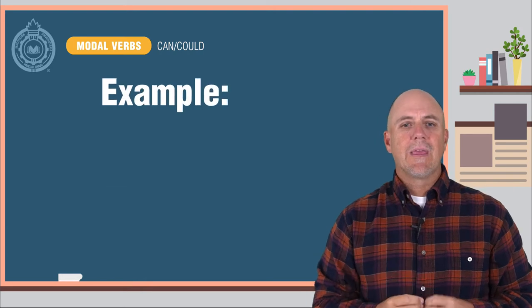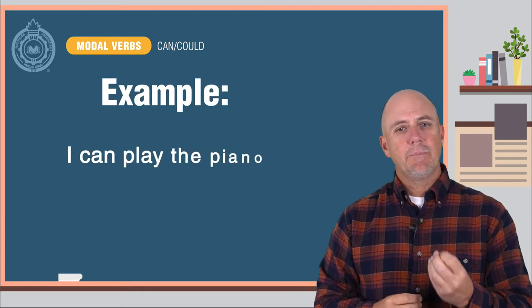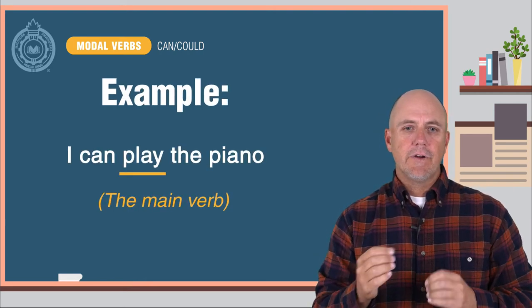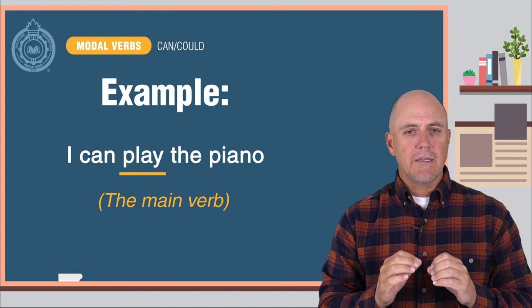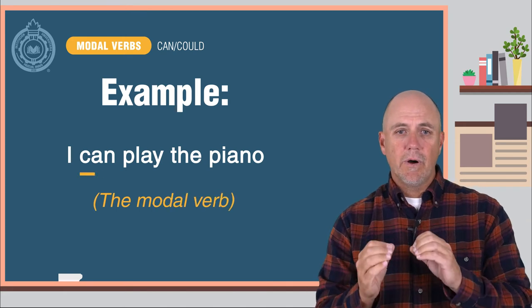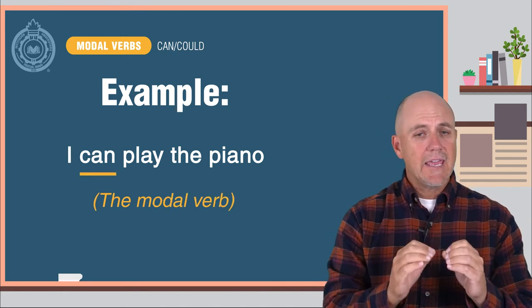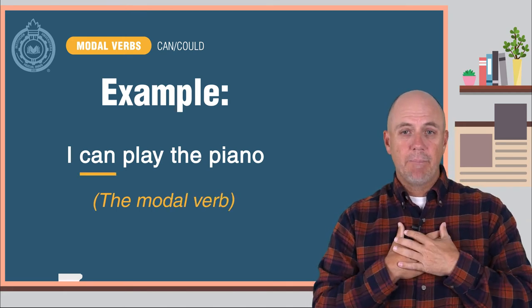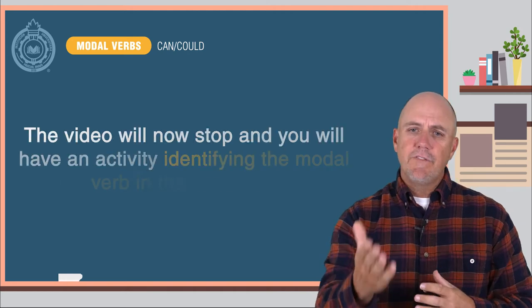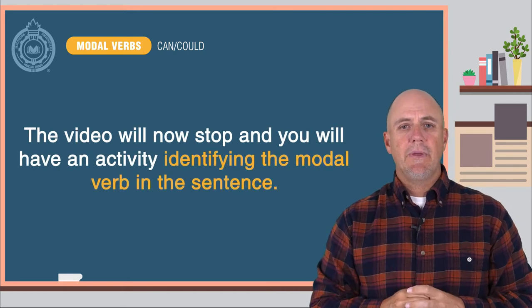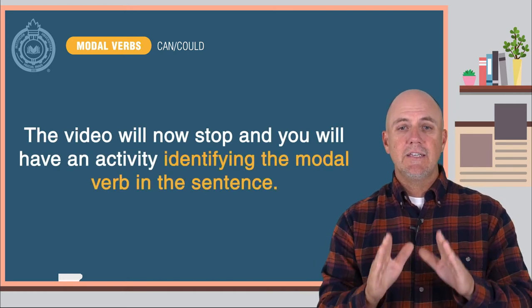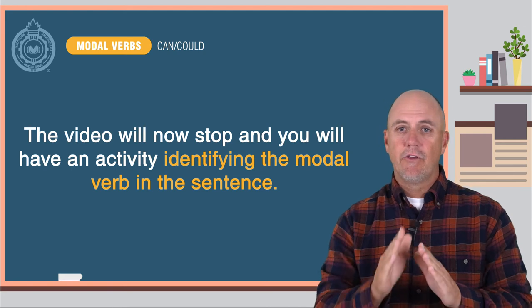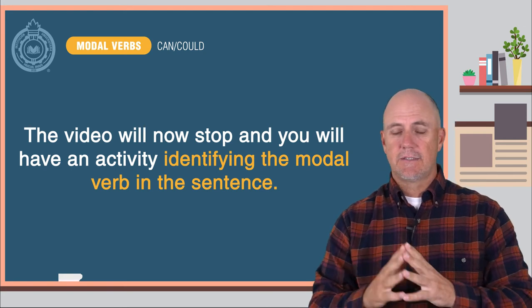They are always the same. For example: I can play the piano. The main verb is play, which is tocar. The modal verb is can, which expresses my ability. The video will now stop and you will have an activity identifying the modal verb in the sentence.